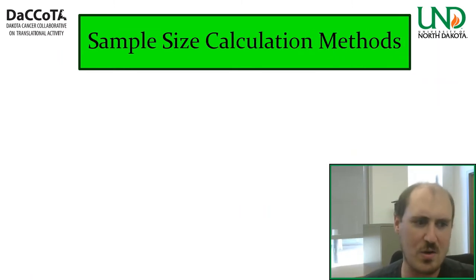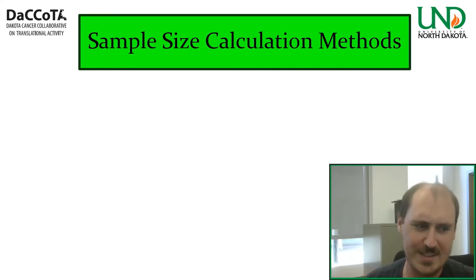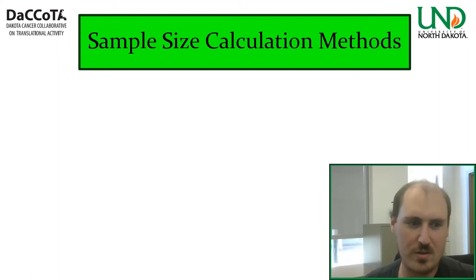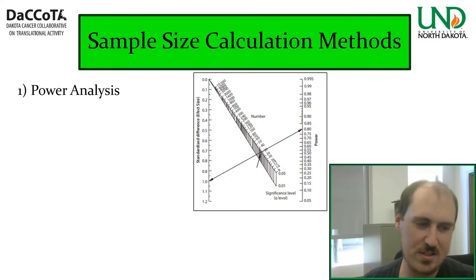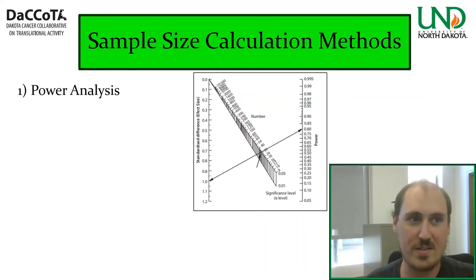How do we calculate sample size once we know our experimental units? There are three approaches. For some studies I use all three; for others, only one is needed. Number one: power analysis. Statistical power is the confidence to detect a certain effect size given a sample size and significance level. Typically power is 0.8 and significance level is 0.05. You'll need an effect size — practically, one will estimate or guess the effect size, and use that along with standard power and significance level to calculate the required sample size.